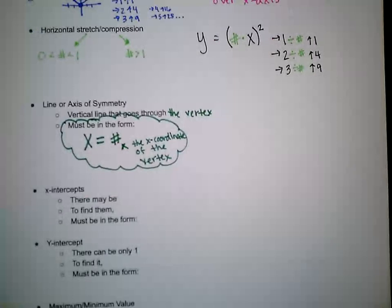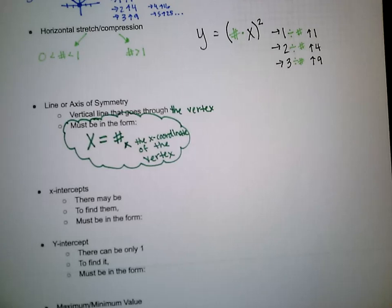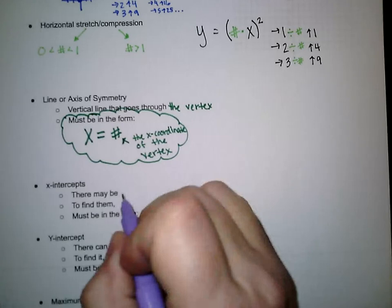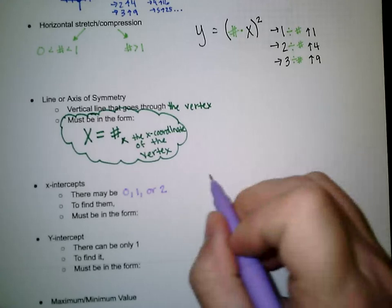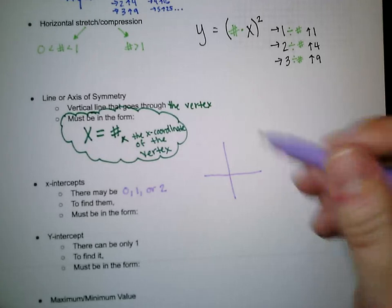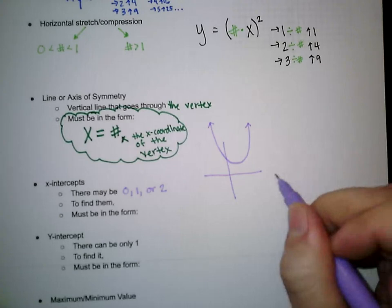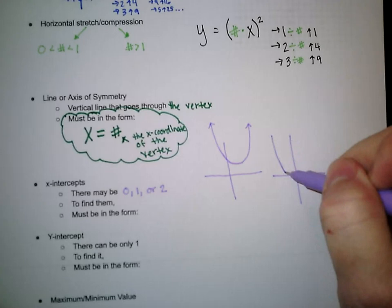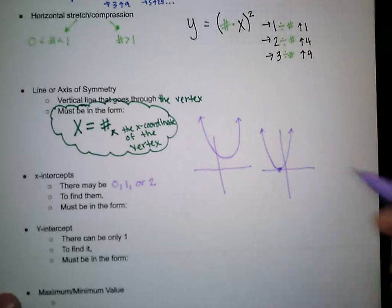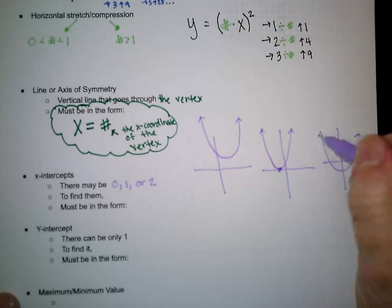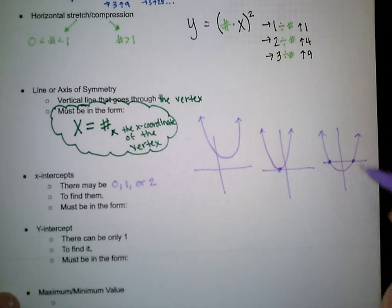Next we have x-intercepts. You might have one x-intercept, two x-intercepts, or no x-intercepts — so there may be 0, 1, or 2. If we don't have any x-intercepts, the parabola never crosses the x-axis — it might be up above, or down below if it opens down. If we have one x-intercept, the parabola comes down and just the vertex touches the x-axis. If we have two x-intercepts, the vertex dips below and it crosses through the x-axis twice.